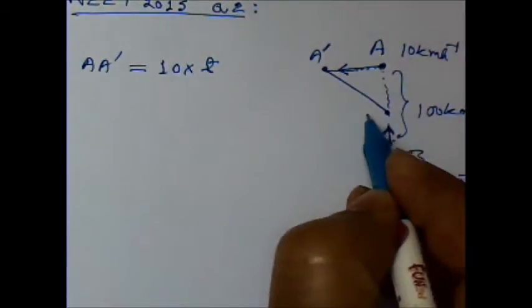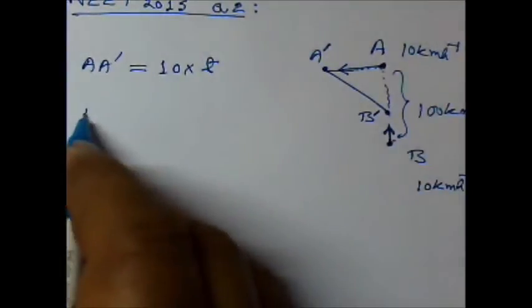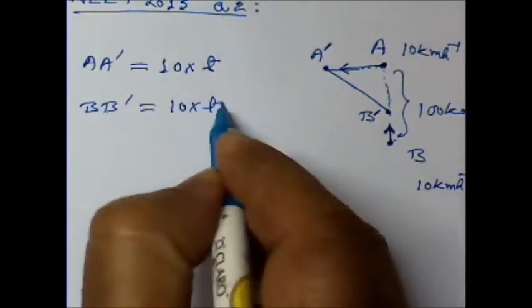Similarly, if I call this B dash, then BB dash will be equal to 10 into T.